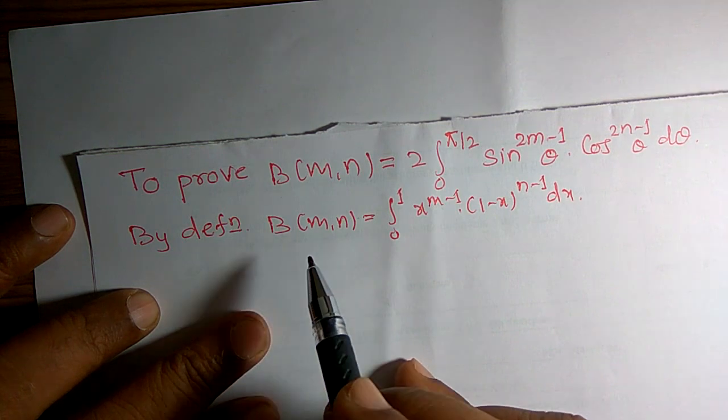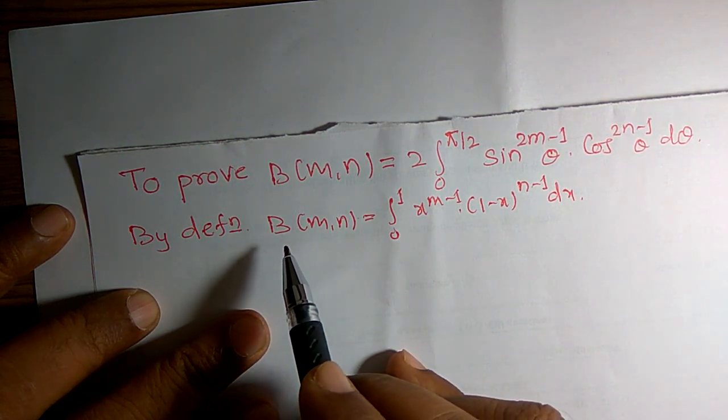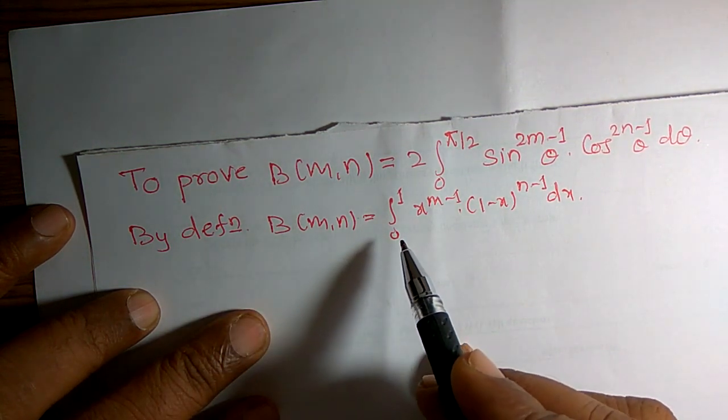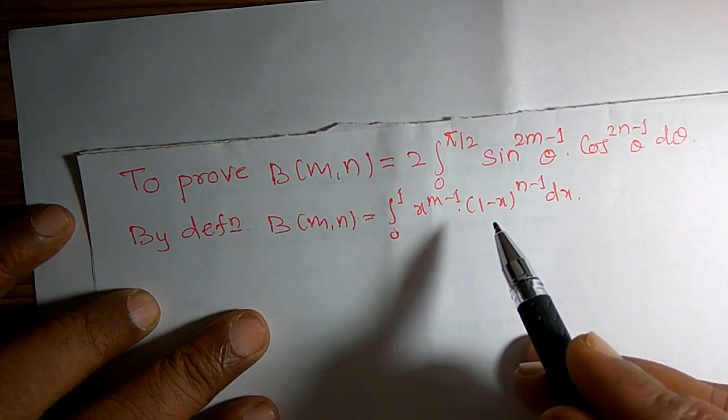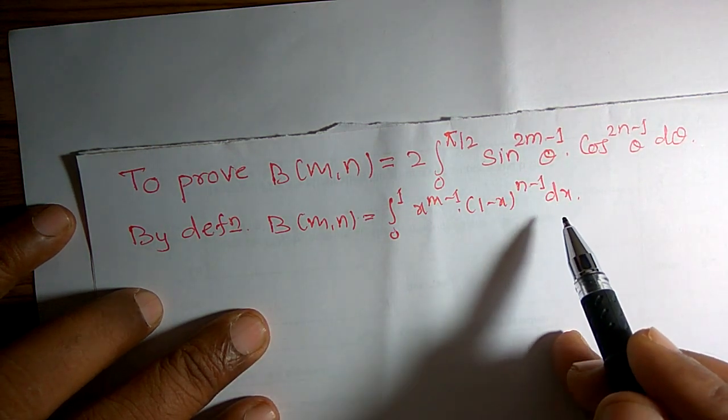I can take the help of the definition of beta function. Beta of m n is equal to integration from 0 to 1 of x raised to m minus 1 into 1 minus x raised to n minus 1 dx.